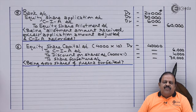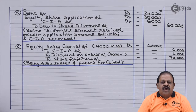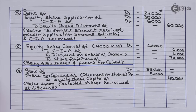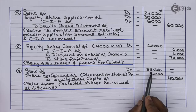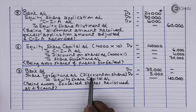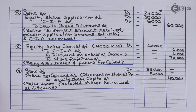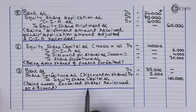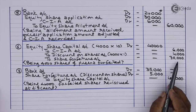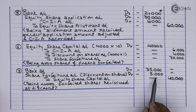Entry 7 — reissue of forfeited shares for ₹35,000: Bank Account Dr ₹35,000, Share Forfeiture Account Dr ₹5,000 (discount allowed on reissue, written off against forfeiture account as per Companies Act) to Equity Share Capital Account ₹40,000, being 4,000 forfeited shares reissued at a discount.